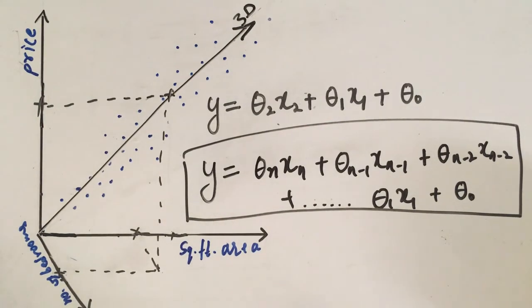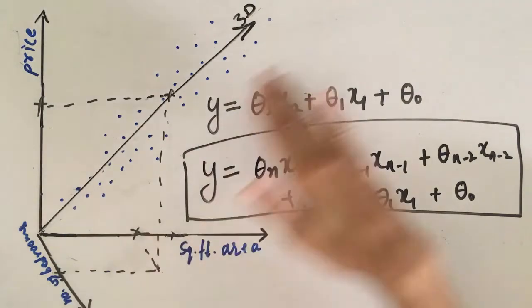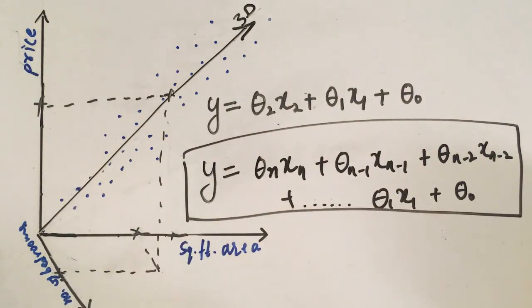Now as you can see that we are approaching the problem linearly by drawing a straight line. That is why this is called linear regression. Now in machine learning we call these variables x 1, x 2, x 3 and so on. We call these variables as features.